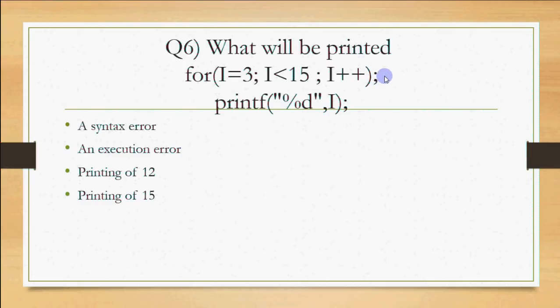A for loop without curly brackets executes only one statement. Since there are no curly brackets here, the one statement associated with the loop is the blank semicolon (null statement). So the loop body is just that blank statement, and nothing is printed during the loop iterations.